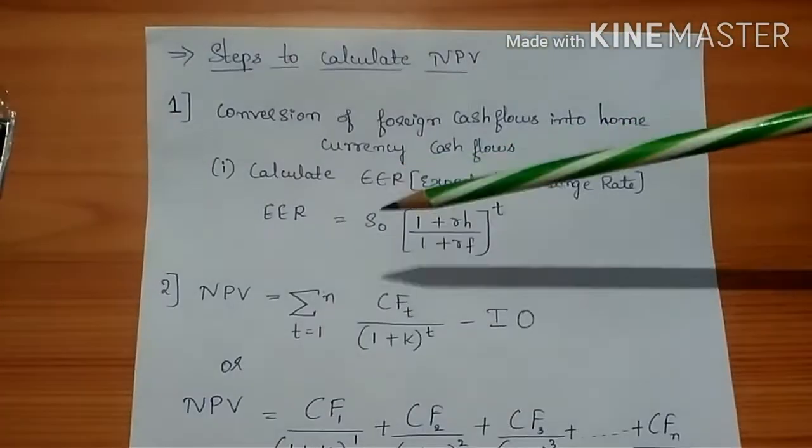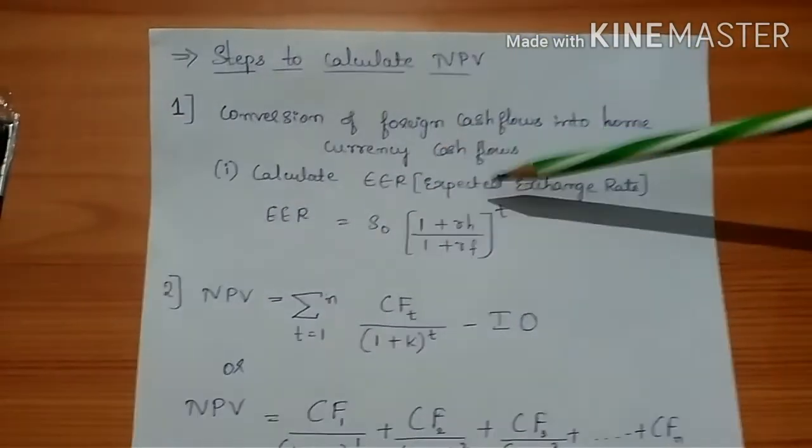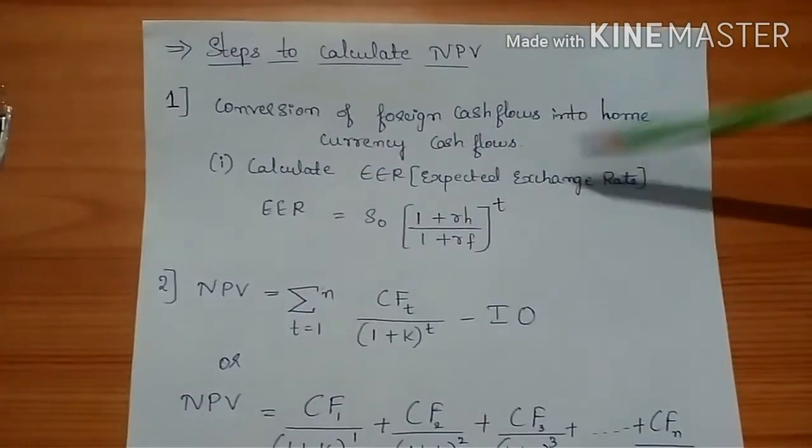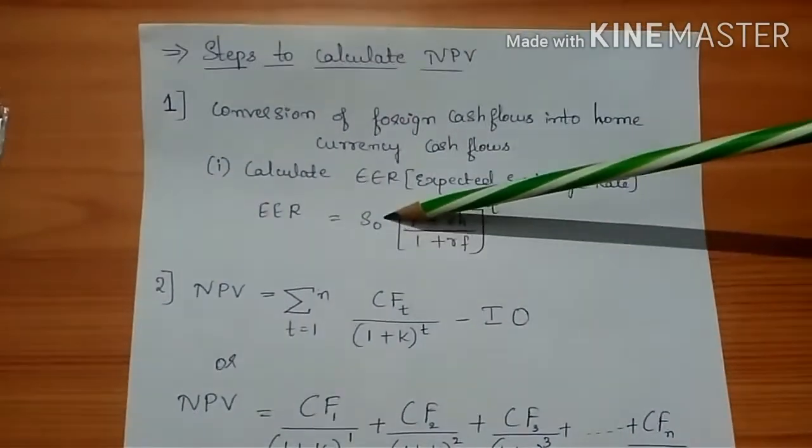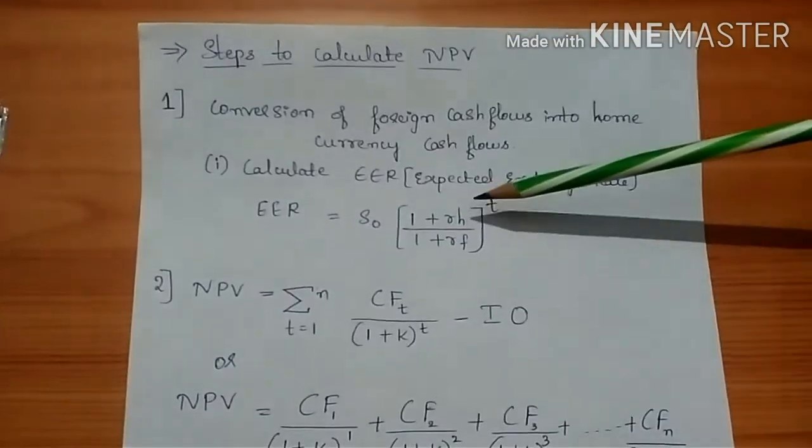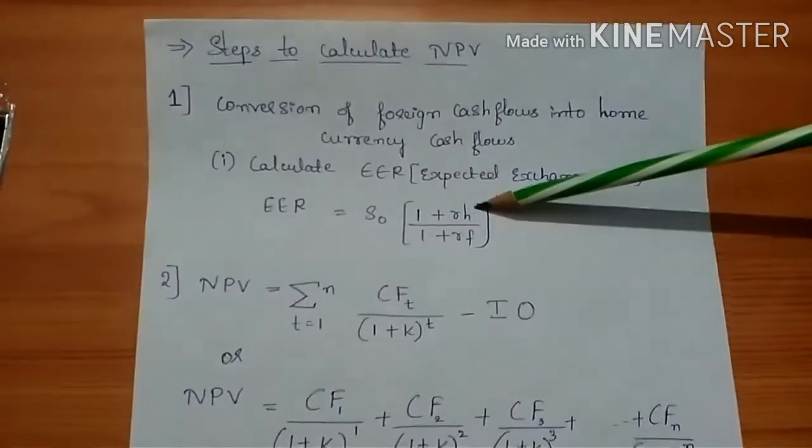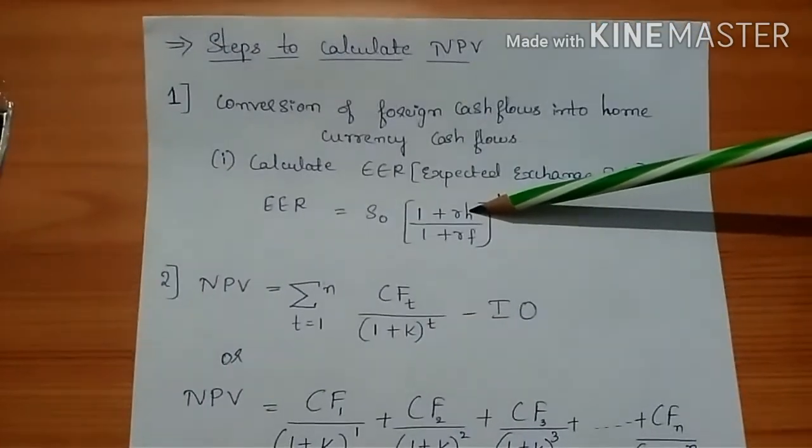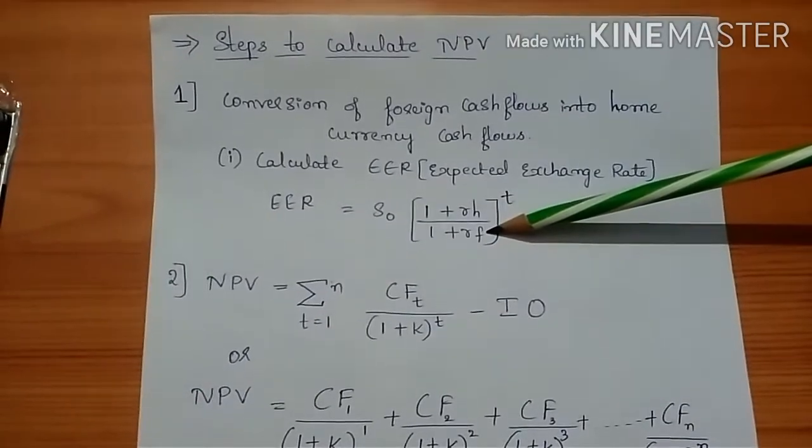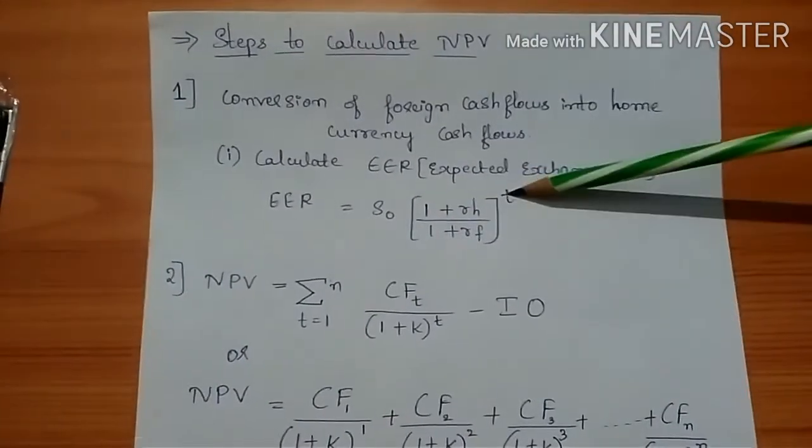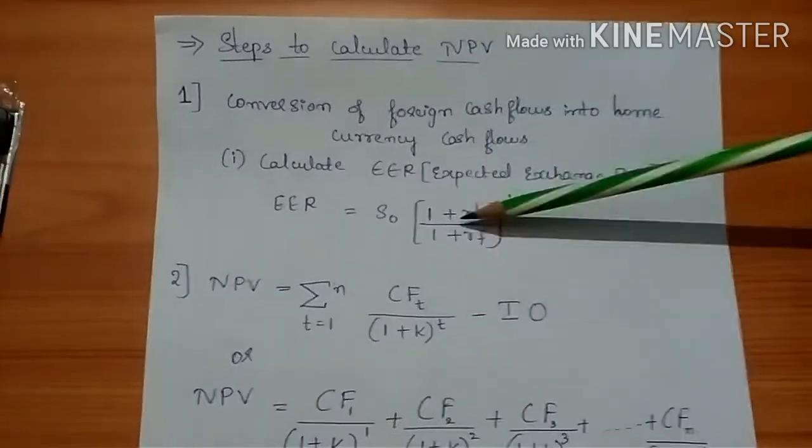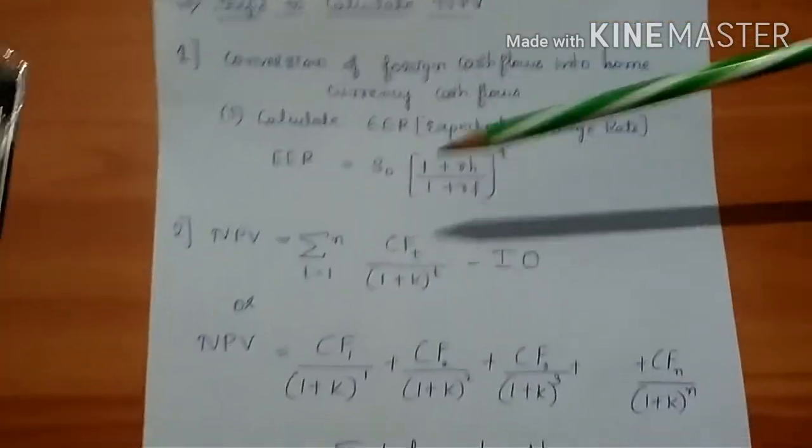To calculate that, we require expected exchange rate. EER, that is expected exchange rate, equals S0, the spot exchange rate, times (1 plus RH), the risk-free rate of home currency, divided by (1 plus RF), risk-free rate of foreign currency, multiplied to the power T, where T is the time period. This is how the first step goes.